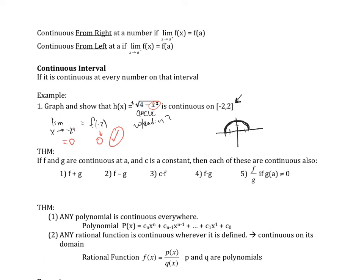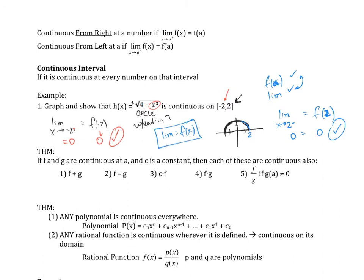I only check from the right because that's the interval — it doesn't care about the other side. Then for positive 2, the limit as x goes to 2 from the left also equals 0, and f(2) equals 0 as well, so this checks off. Since f(a) exists, the limit exists, and the limit equals f(a) — all three conditions hold — it was continuous on this interval.